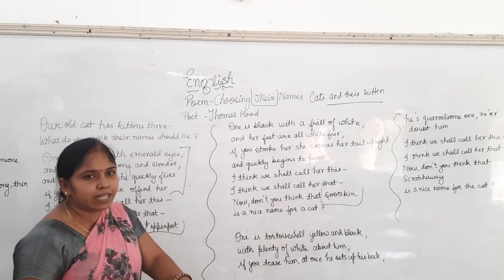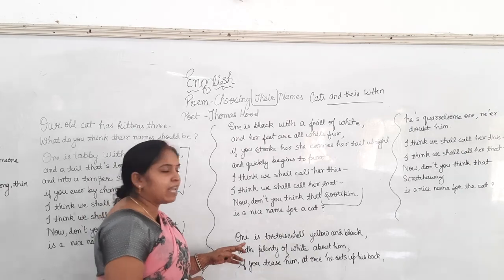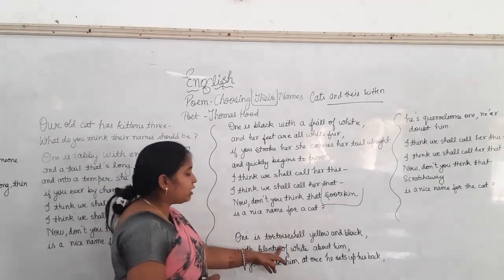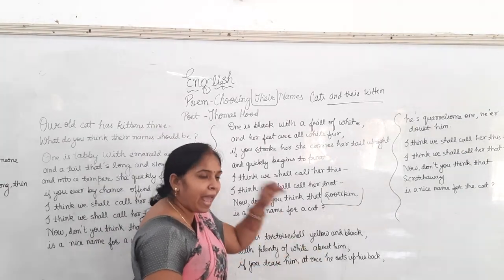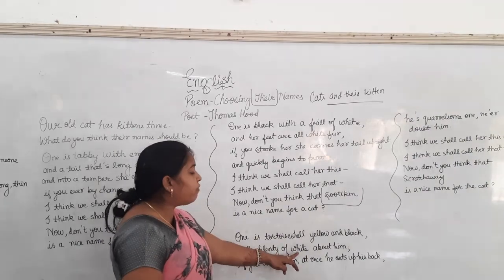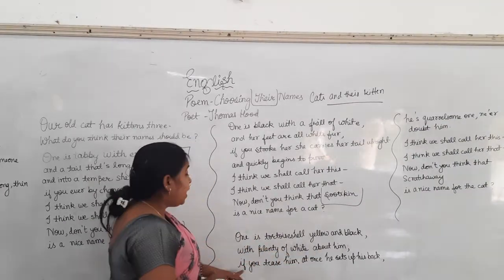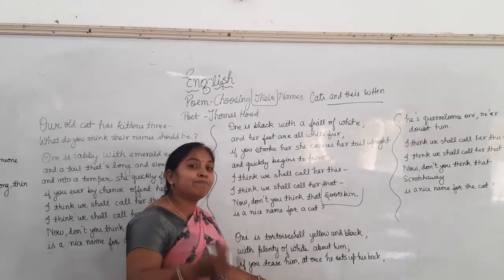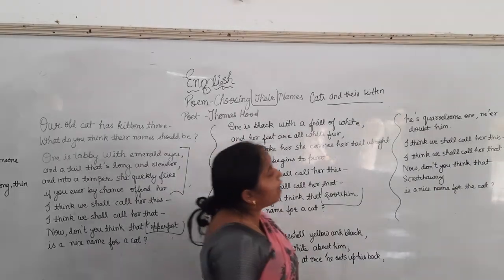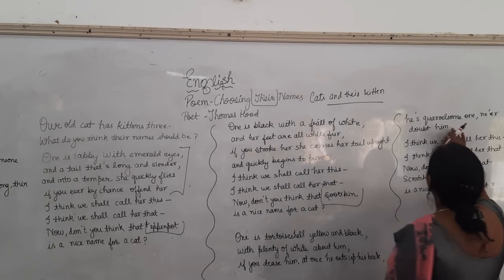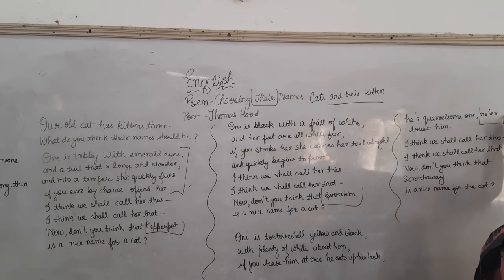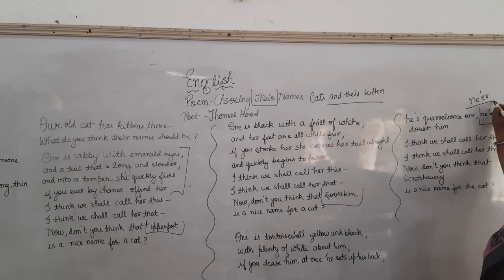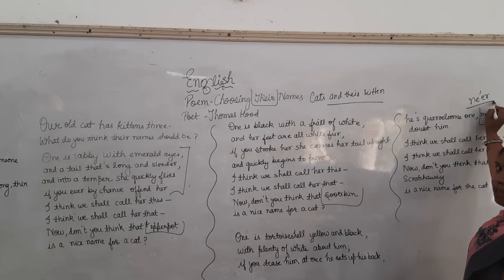Now come to the third stanza. The lines are: one is totally shy, yellow and black, with plenty of bite about him. If you please him, at once he sets up his back. He is a fierce one — never doubt him.